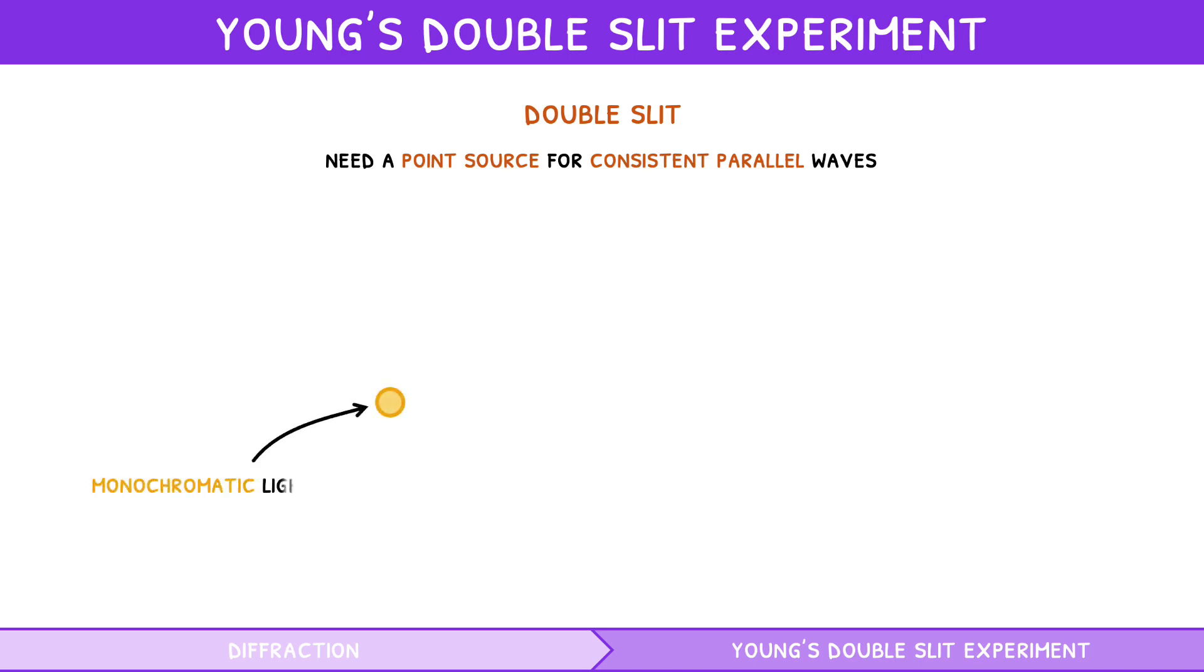A monochromatic light source. This emits a single frequency of light. Whilst waves containing different frequencies can still interfere, they produce a less clear pattern.